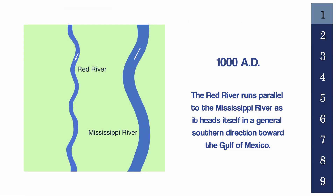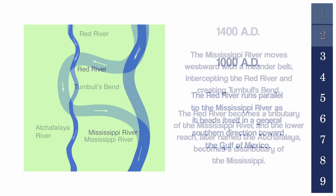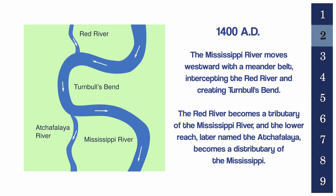The Red River runs parallel to the Mississippi River as it heads in a general southern direction toward the Gulf of Mexico. Around 1400 AD, the Mississippi River moved westward with a meander belt, intercepting the Red River and creating Turnbull's Bend. The Red River became a tributary of the Mississippi River, and the lower reach, later named the Atchafalaya, became a distributary of the Mississippi.